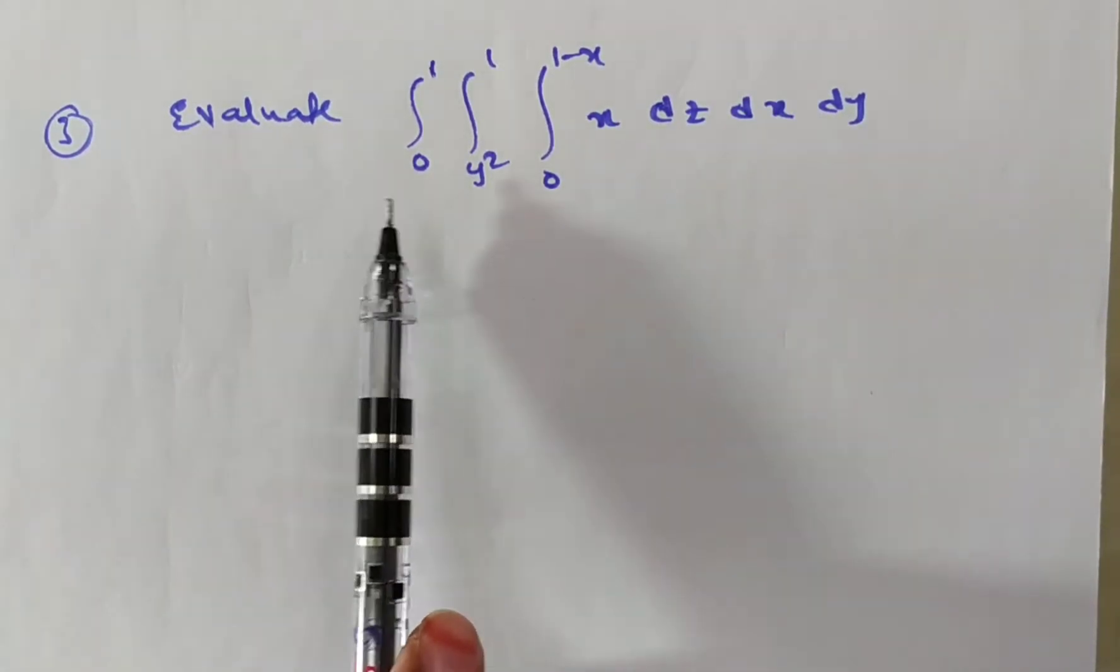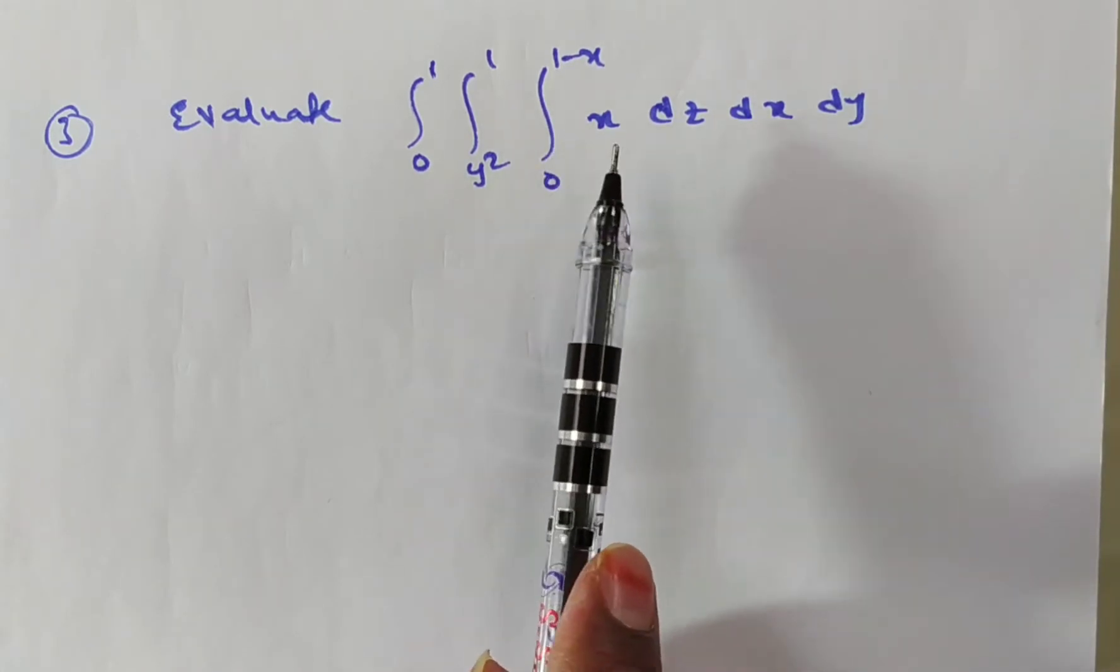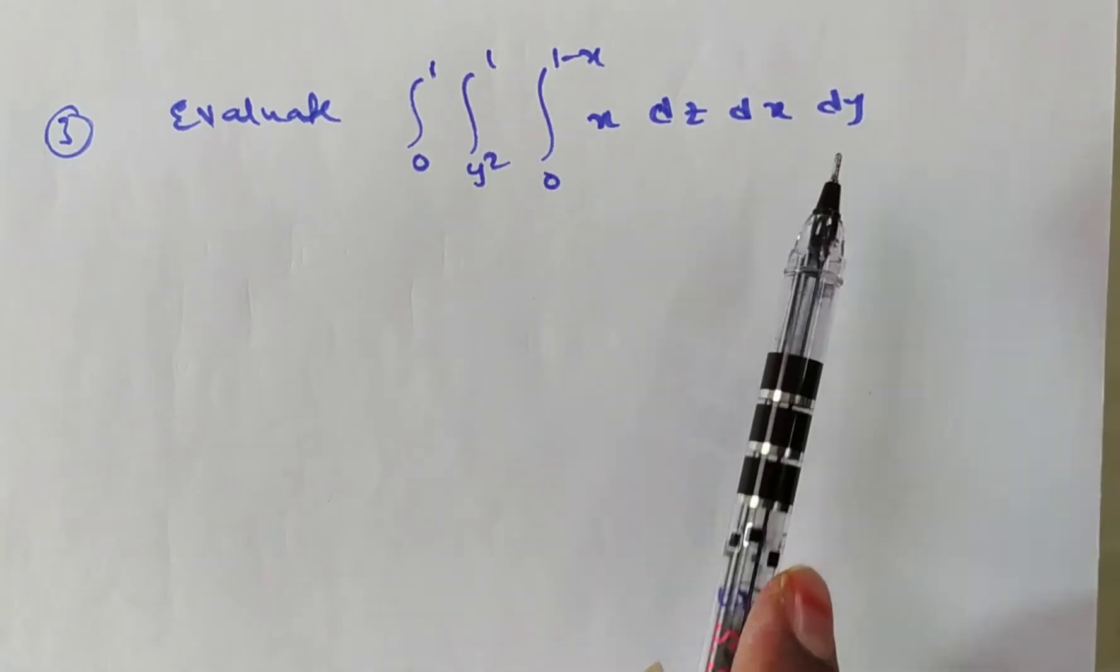Given problem is: evaluate integral 0 to 1, y square to 1, 0 to 1 minus x, integrand is x, dz dx dy.